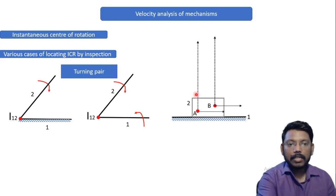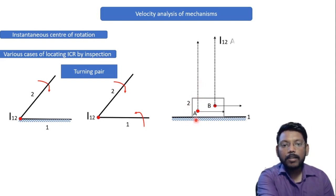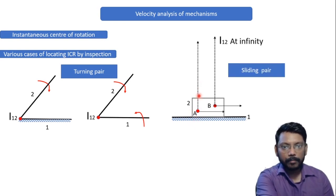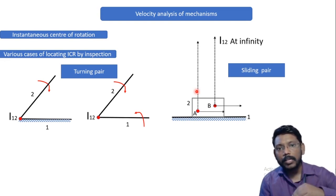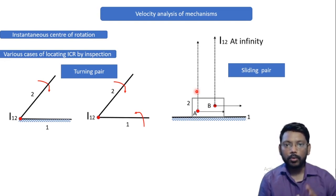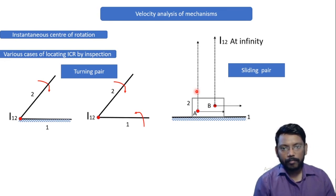So we can see that these perpendiculars are never going to intersect each other or with any other part. That's the reason we can see this ICR between link one and two will be at infinity. So this was an ICR for a sliding pair. When the sliding pair comes, if the two links are connected to the sliding pair, it will keep on going and ongoing. That is at infinity.